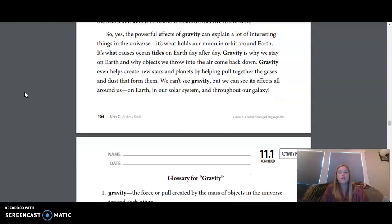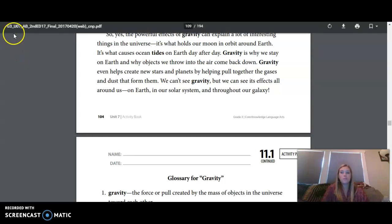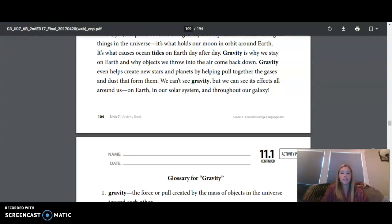So yes, the powerful effects of gravity can explain a lot of interesting things in the universe. It's what holds our Moon in orbit around Earth. It's what causes ocean tides on Earth day after day. Gravity is why we stay on Earth, and why objects we throw into the air come back down. Gravity even helps us create new stars and planets by helping pull together the gases and dust that form them. We can't see gravity, but we can see its effects all around us, on Earth, in our solar system, and throughout our galaxy. You may now move on to Unit 7, Lesson 11, Google Form.